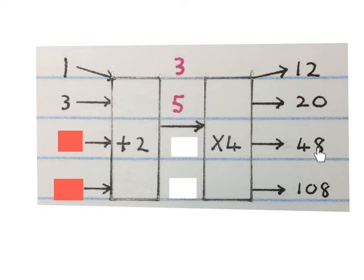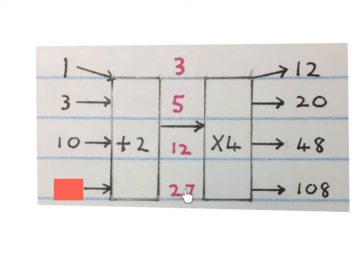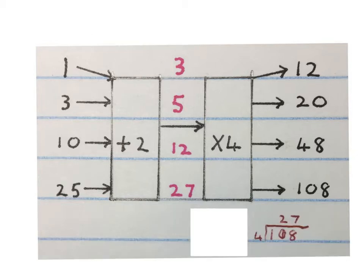Then we take the 48, divide it by 4, get 12, and then minus 2 from it, gives us 10. Last one of this diagram, we take the 108, divide it by 4, gives us 27, and then minus 2 from it — that gives us 25. You might have to do a little extra sum on the side if you have trouble dividing 4 into that big number.